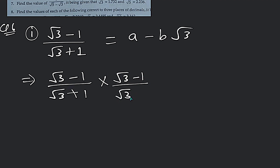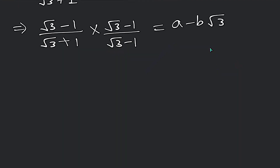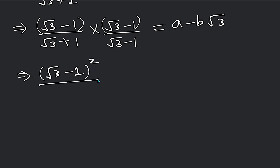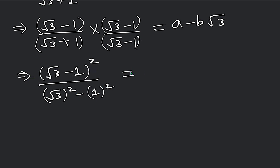To rationalize, we look at (√3 - 1) in the numerator. What is going on up and what is going on down? We multiply top and bottom by the same thing — (√3 - 1). So (√3 - 1) is going on up, and down we apply the (a+b)(a-b) identity, giving us a² minus b²: that is (√3)² minus 1².